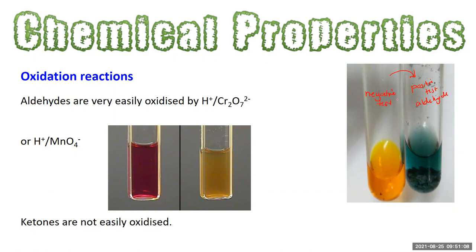Similarly, oxidation with acidified potassium permanganate: a negative test retains the magenta color, while a positive test results in the magenta color being lost, leaving a brownish or colorless solution.